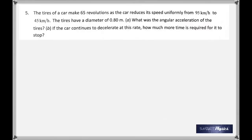In the fifth question, the tires of a car make 65 revolutions as the car reduces its speed uniformly from 95 km/h to 45 km/h. That unit is wrong — we need to change it to meters per second. The tires have a diameter of 0.80 meters. What was the angular acceleration, and if it continues to decelerate, how much more time is required?